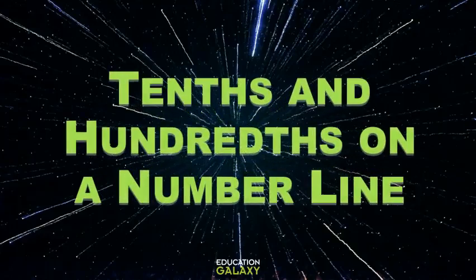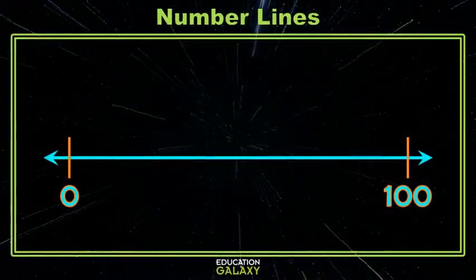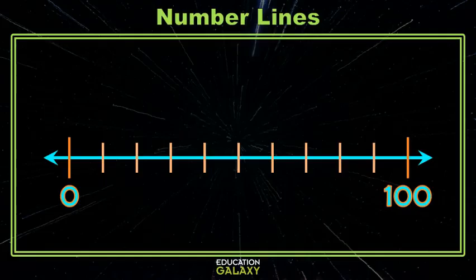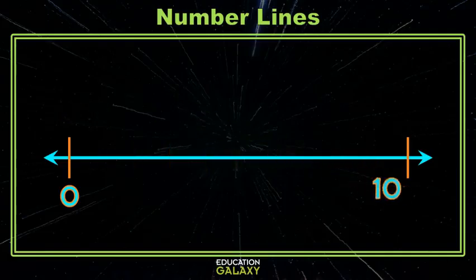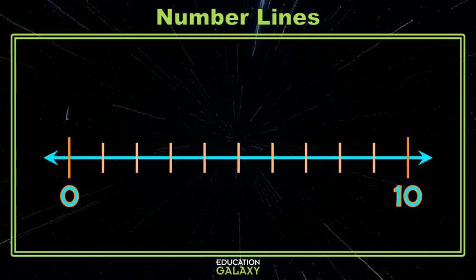Hey everybody, today we're talking about tenths and hundredths on a number line. We'll start by taking a trip back in time when we had a number line from 0 to 100, and we broke that into 10 equal parts, and each of those parts was 10. Or when we had 0 to 10, and we'd break that into 10 equal parts, each of those spaces represents 1.